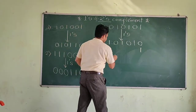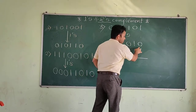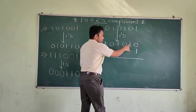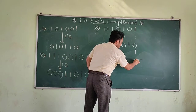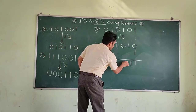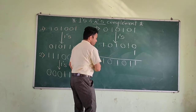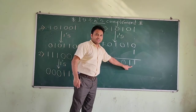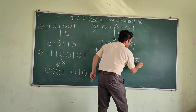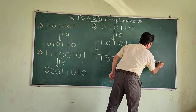We have to add 1 like this. We know how to add binary numbers. So 0 plus 1 will be 1. This 1 will be as it is, 0, 1, 1, carry. So this is the answer — this is the 2s complement of the given number.